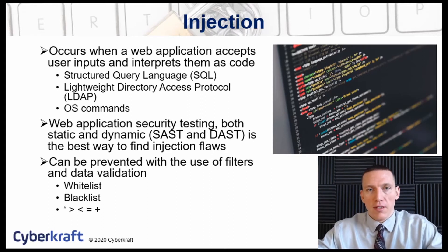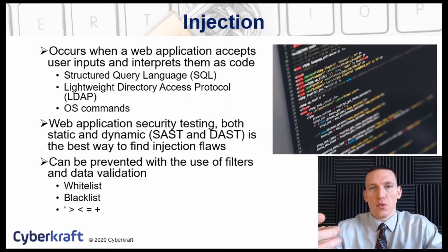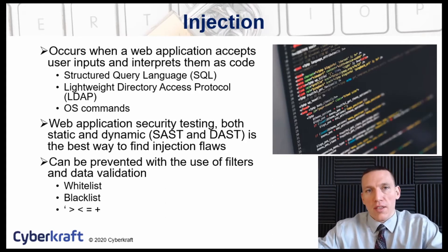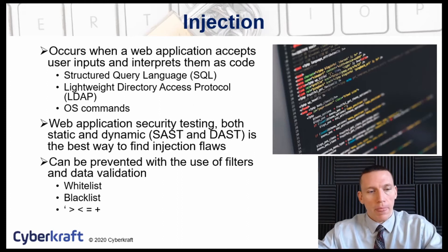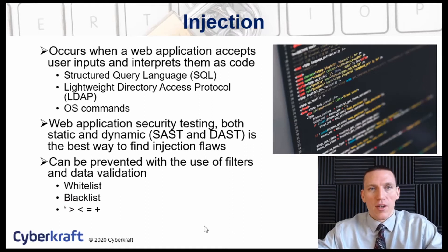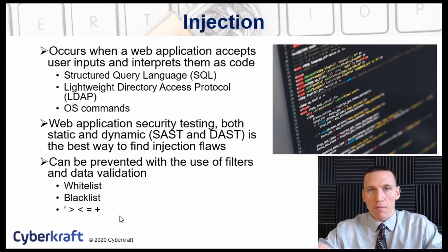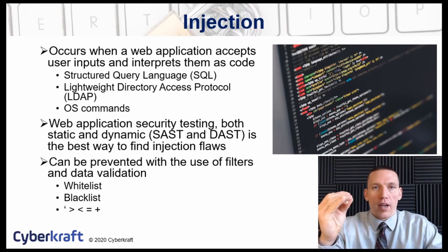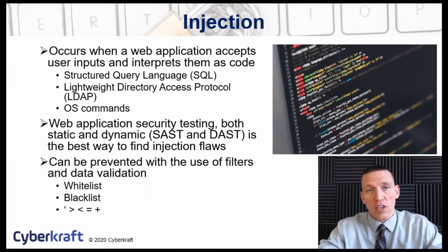The main way to prevent these types of attacks is to perform a whitelist or a blacklist. A whitelist is a list of commands that are allowed within the application, and a blacklist is a list of commands or characters that are not allowed. The apostrophe is notorious, especially with SQL injection attacks. Just by making it impossible for attackers to input an apostrophe into your web application, you've taken a great step toward securing that application.